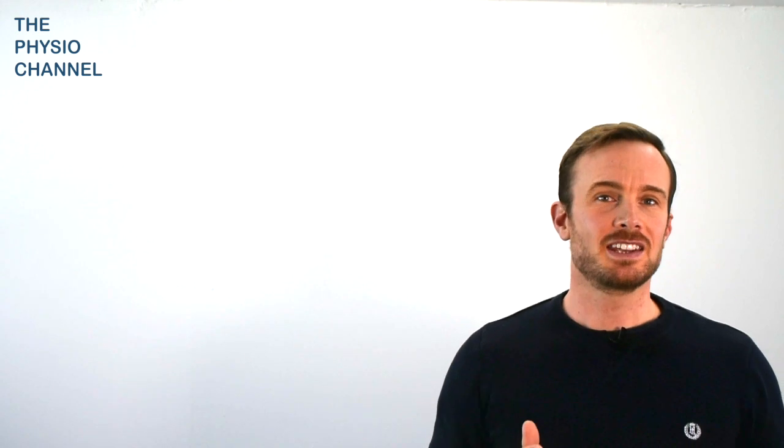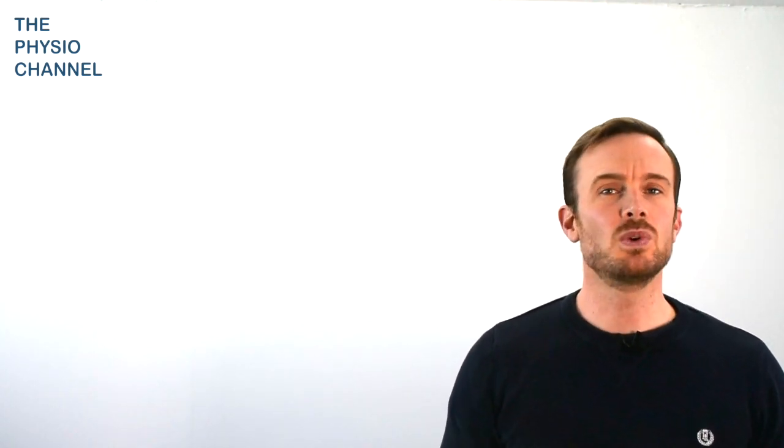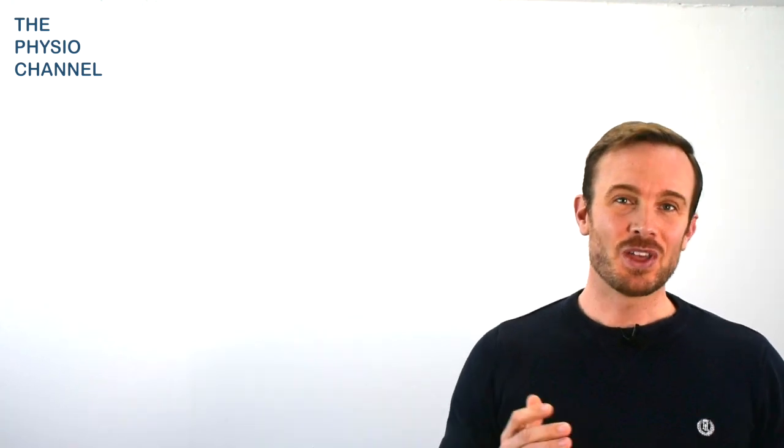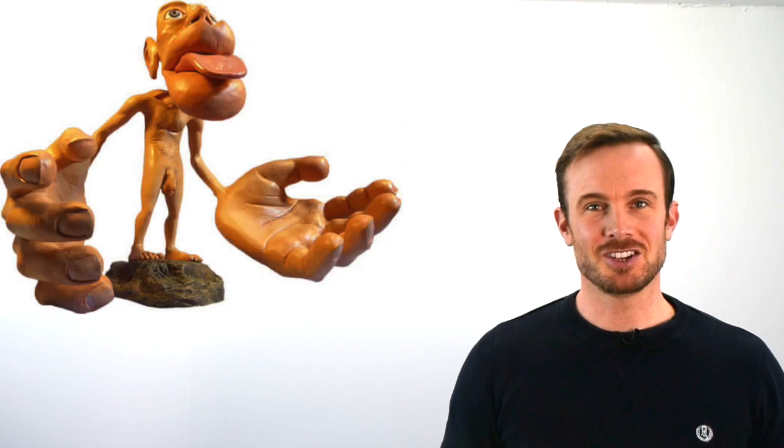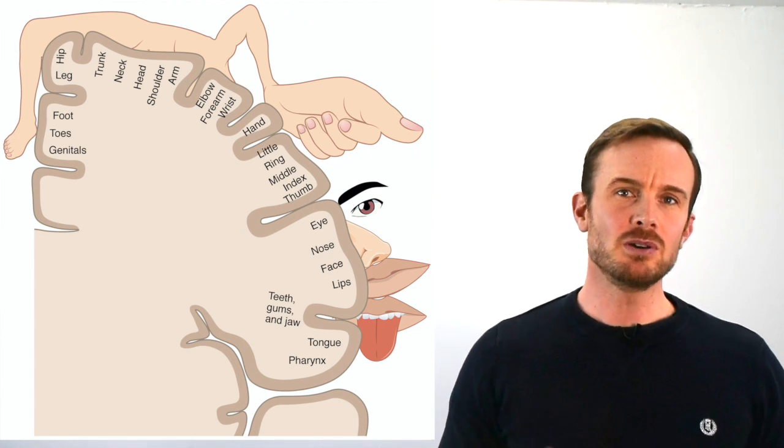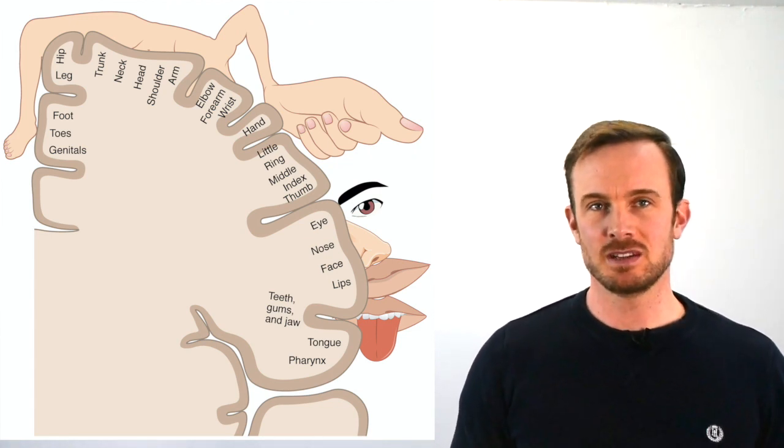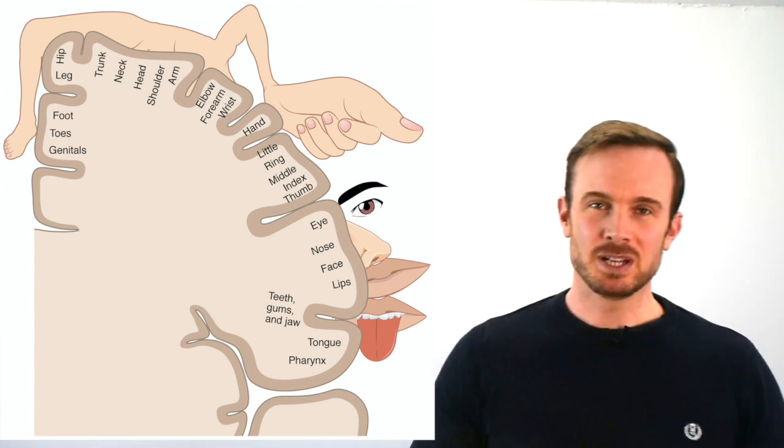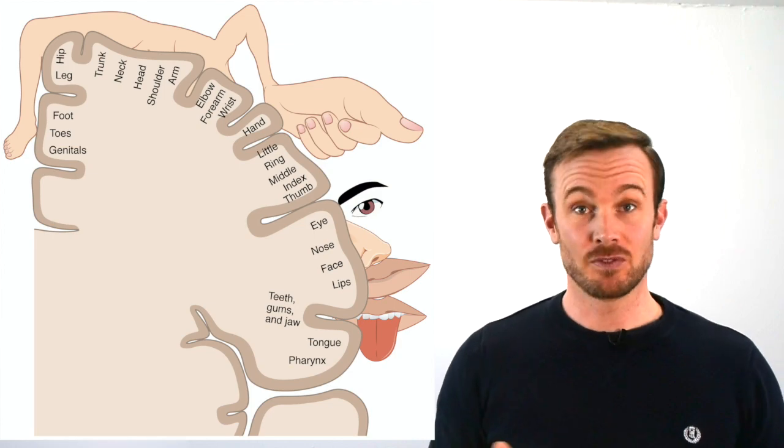So in conclusion Penfield and Baldry's homunculus had challenges from its beginnings and its passage through time has always been challenged by scientists. Although many of its specific features are now disproven this little person inside our head remains a popular and arresting image. Perhaps one reason it's weathered so well is the fact that it boldly serves as a visual metaphor of how our brain might engage with stimuli and movement. And when it comes to neuroscience there are no other images that offer such simplicity from complexity.